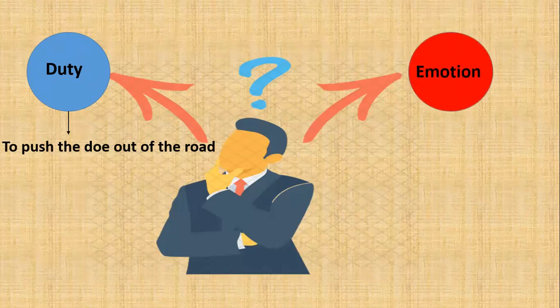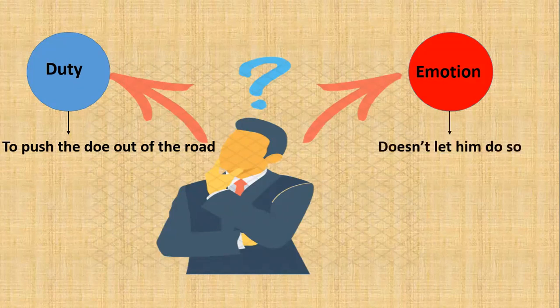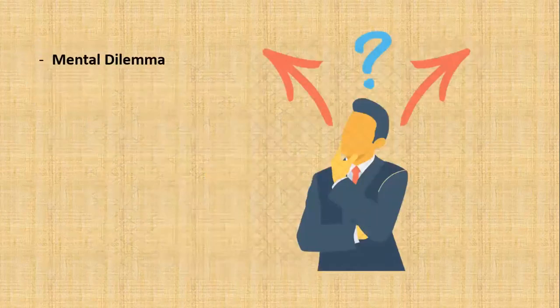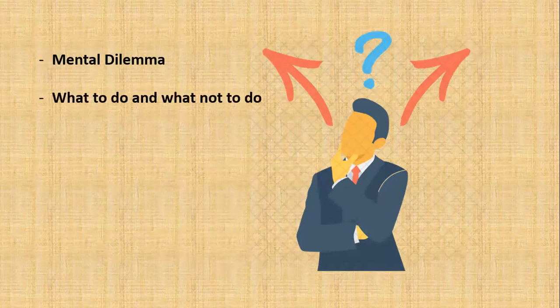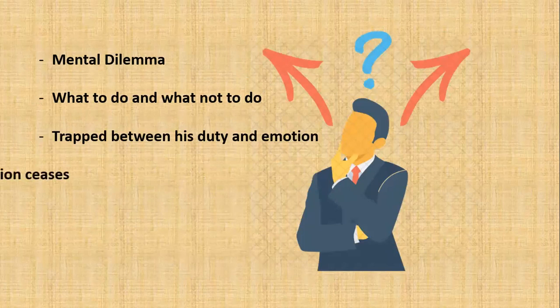But on the other hand, his emotion, awakened after realizing the condition of the unborn fawn, does not let him do so. Now the speaker is in mental dilemma. He cannot decide what to do and what not to do. In fact, he's trapped between his duty and emotions.